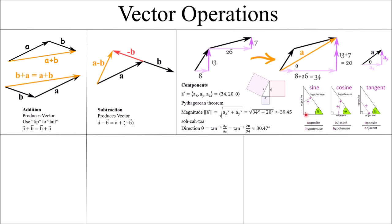Trig deals with right triangles. Remember SOHCAHTOA: sine is opposite over hypotenuse, cosine is adjacent over hypotenuse, and tangent is opposite over adjacent. A lot of times we use X and Y components to get information about the hypotenuse, so we use tangent. When finding an angle, we use arctangent, or tan-1. To find the angle of our final vector, we do tan-1 of Y over X — so tan-1 of 20 over 34 — giving an angle of approximately 30.47 degrees.